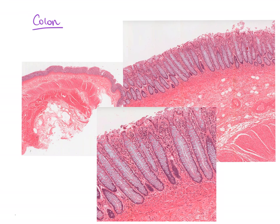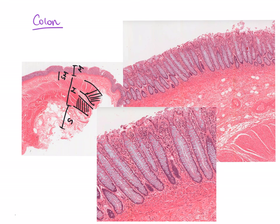Now let's finish off with the large intestine. Again we have low, medium, and high power pictures. There is a mucosa layer, submucosa layer, muscularis layer, and serosa layer. Notably, the muscularis layer in the large intestine has two distinct layers: an inner circular layer and an outer longitudinal layer. The outer longitudinal layer is incomplete — where it exists, these strips of longitudinal muscle are called teniae coli. We're looking at a section through a teniae coli because the longitudinal layer is visible here.